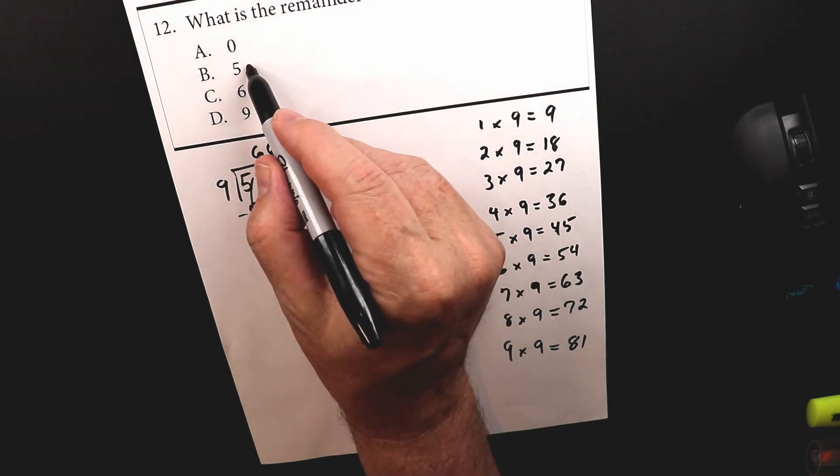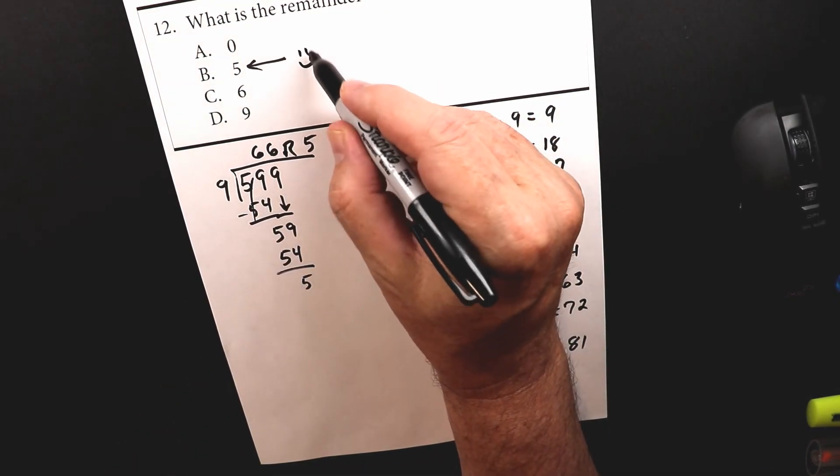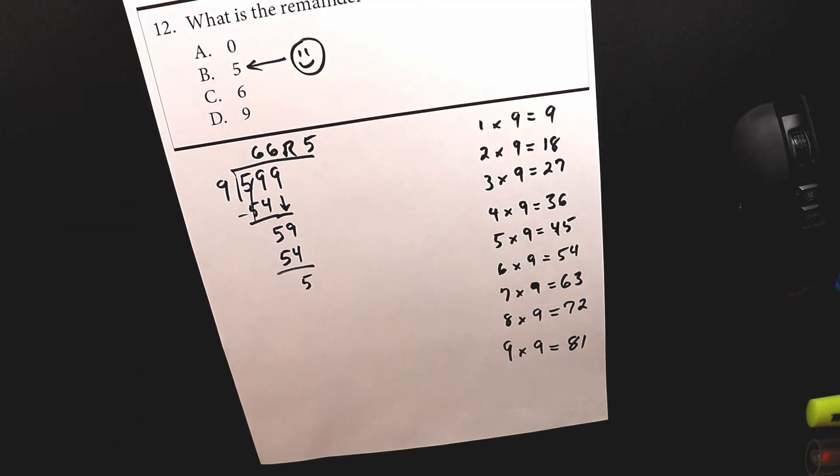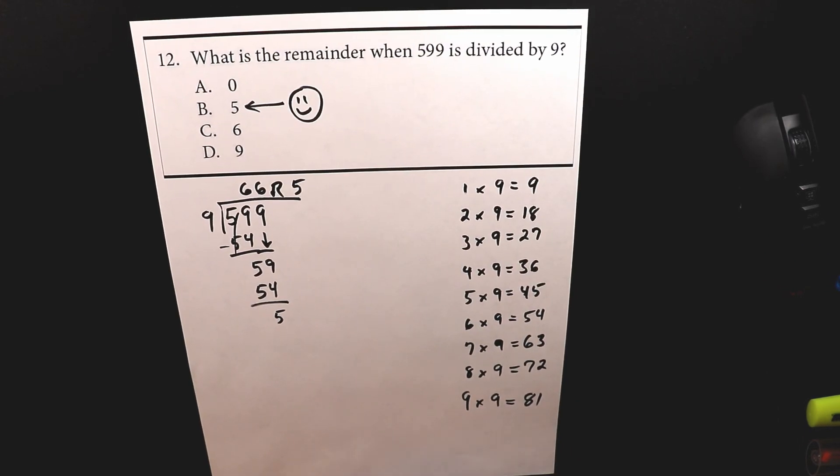And then I look over here, letter B. So this is just a review of whether or not you remember how to do remainders. And we did a similar one with problem number nine, when Xiaoming was making cookies.